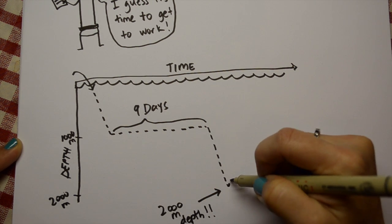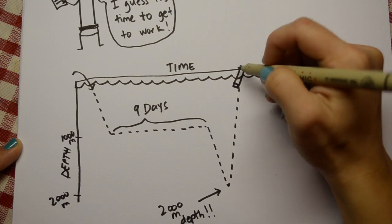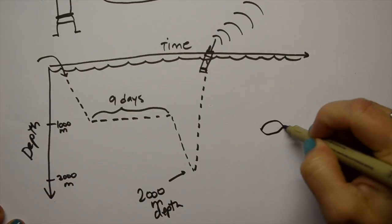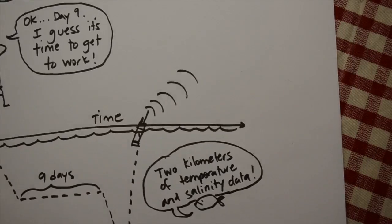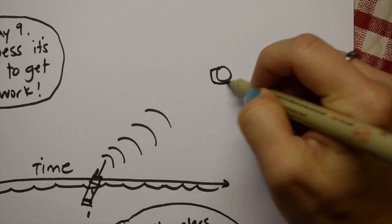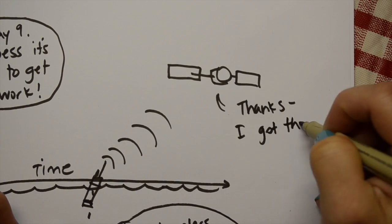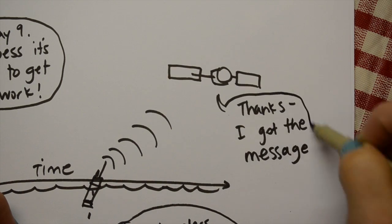The float sinks down to 2000 meters and then rises to the surface over the course of a few hours, collecting temperature and salinity data along its ascent. Once it's at the surface, it communicates with the satellite to send the most recent profile back to data centers on land.